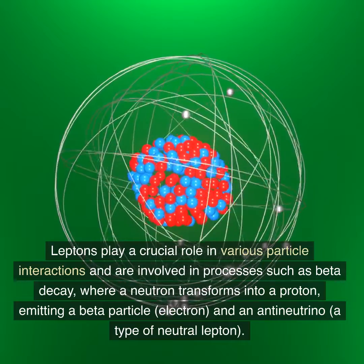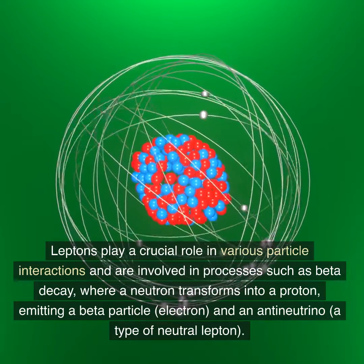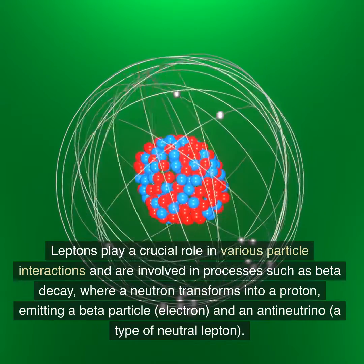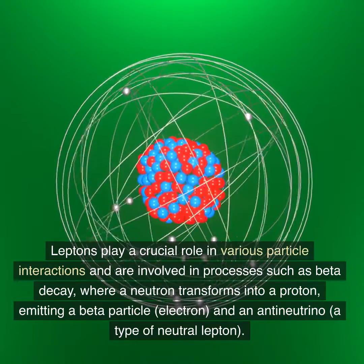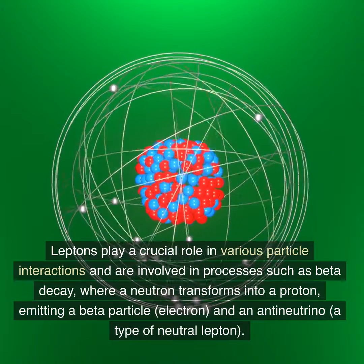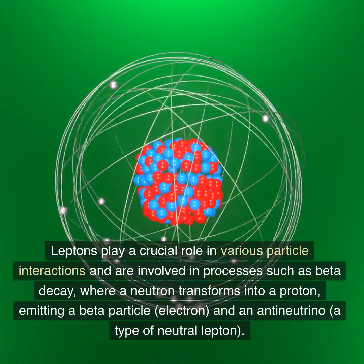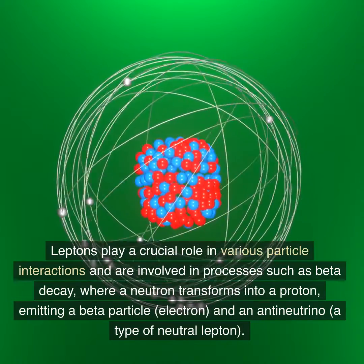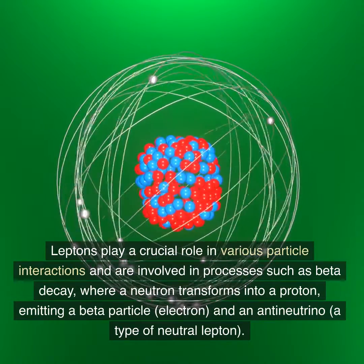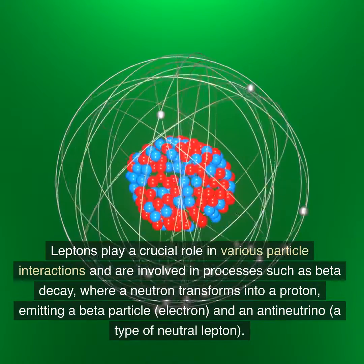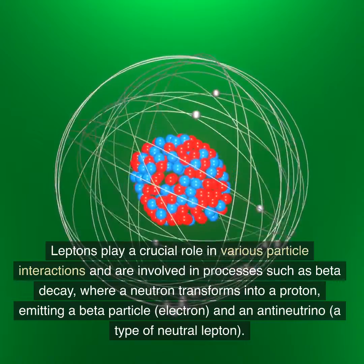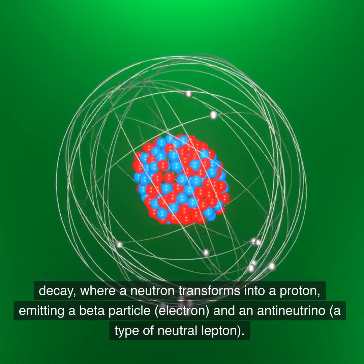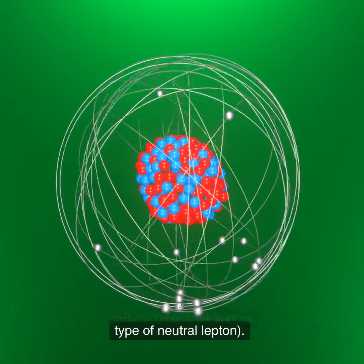Leptons play a crucial role in various particle interactions and are involved in processes such as beta decay, where a neutron transforms into a proton, emitting a beta particle (electron) and an antineutrino, a type of neutral lepton.